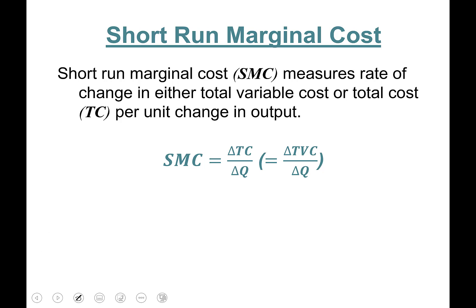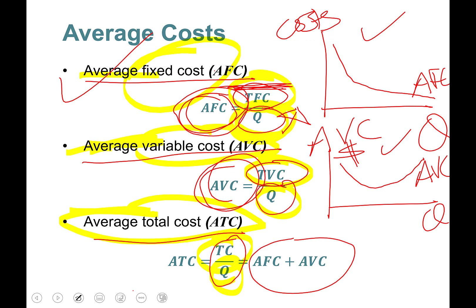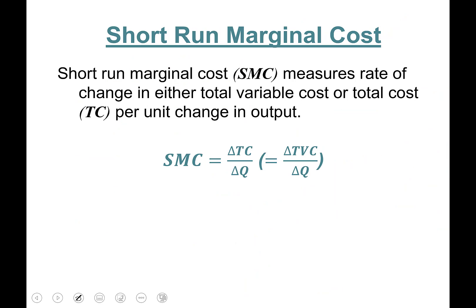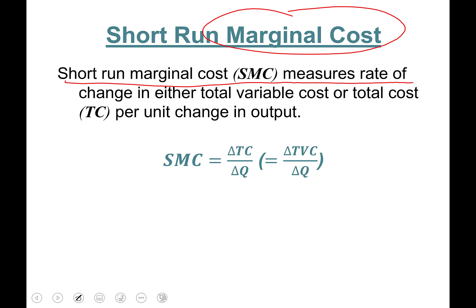We are not done with the short run family of cost curves. In addition to average fixed cost, average variable cost, and average total cost, we have the fourth member: short run marginal cost. Short run marginal cost measures the rate of change in either total variable cost or total cost per unit change in output. SMC equals change in total cost divided by change in quantity, or change in total variable cost divided by change in quantity.